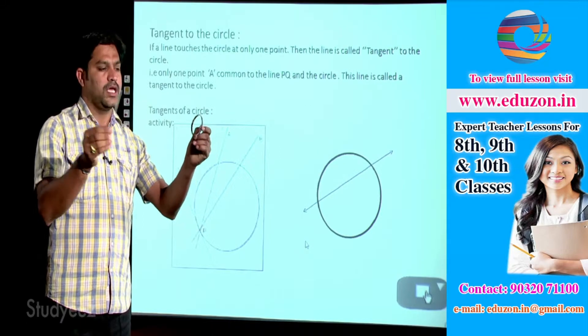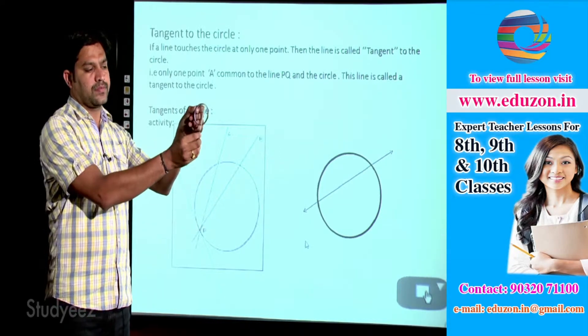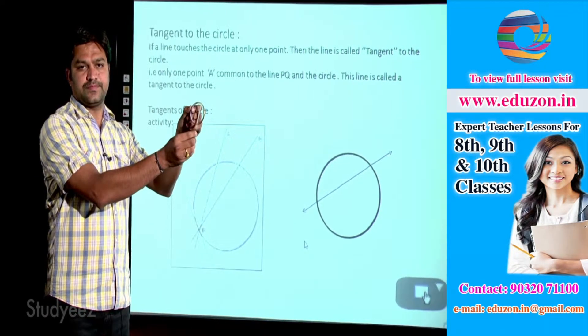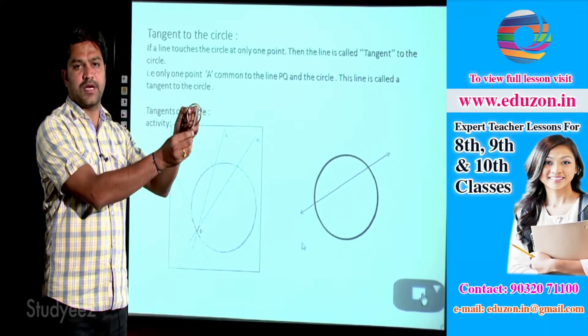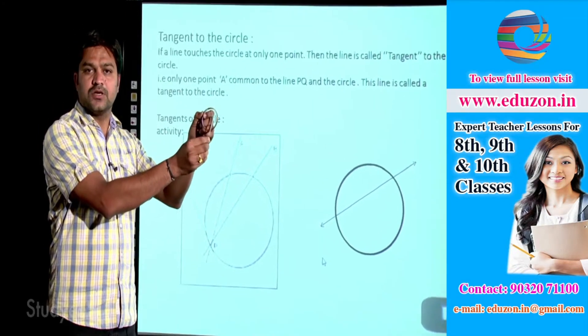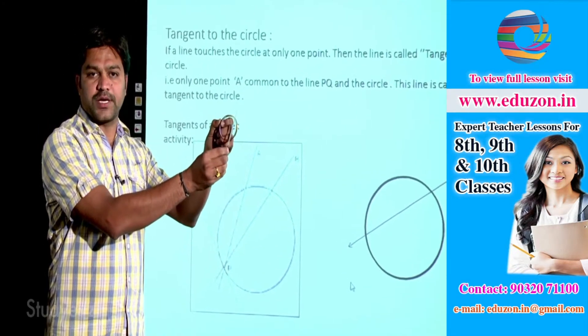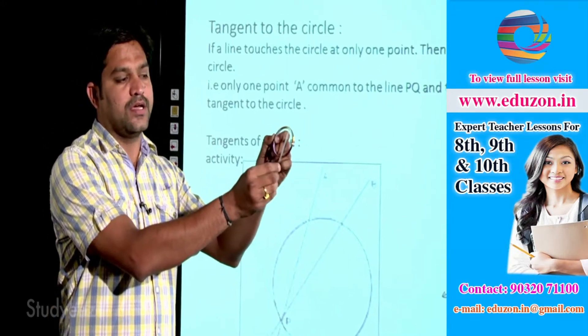For example, if you take it this way, it is a secant of the circle because it touches the circle at two distinct points, so it is a secant.